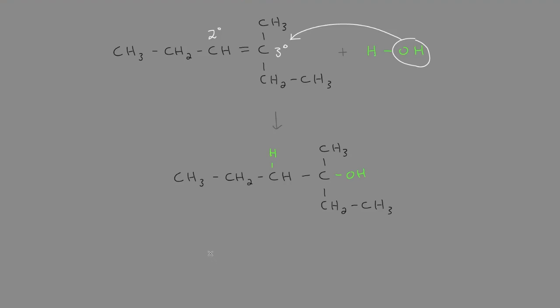To name this molecule, we find the longest backbone possible. So it looks like the longest backbone will be six carbons. And you want to start at the end which has the lowest numbers for substituted side groups.